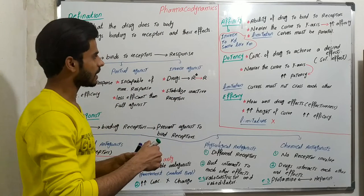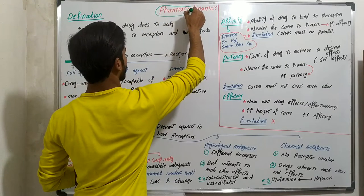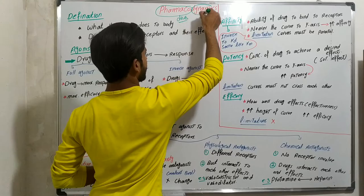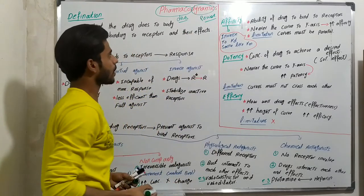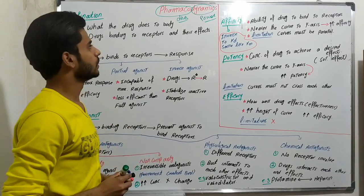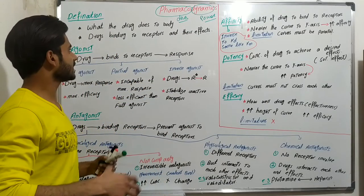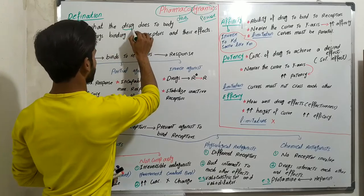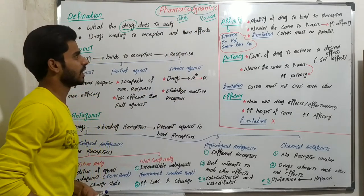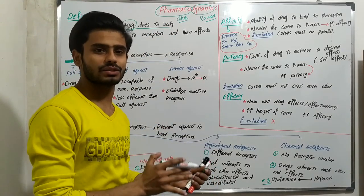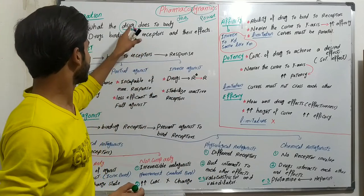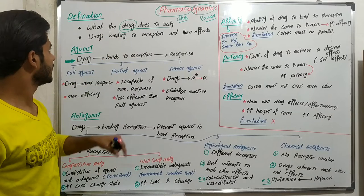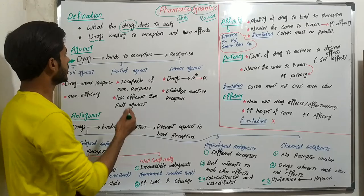The first term is pharmacodynamics. 'Pharmaco' means drug, and 'dynamics' means power. So pharmacodynamics means the power of the drug — what the drug does to the body. The drug shows its power to the body. In contrast, in pharmacokinetics, it was about what the body does to the drug. Now in pharmacodynamics, the drug will show its effects on the body.